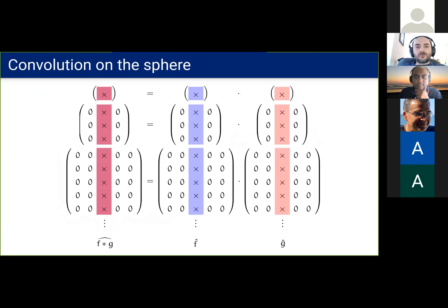Now the spectrum of the convolution between functions on the sphere can be computed by multiplying the corresponding sparse matrix at each degree. Note that the same sparsity pattern appears in the output, so the output is also a function on the sphere.